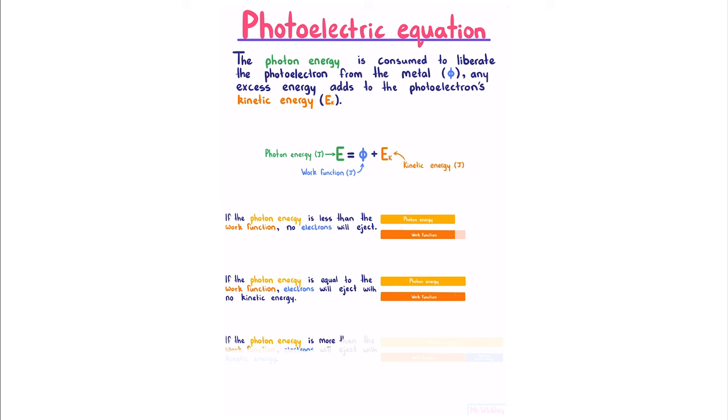If the photon energy is more than the work function, electrons will eject with kinetic energy. So part of our photon energy is used to liberate the electron, and the rest goes into the electron kinetic energy.